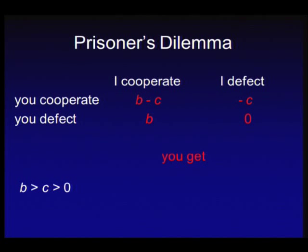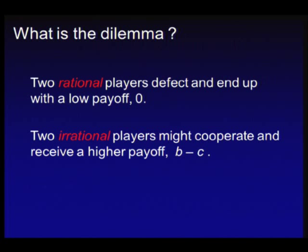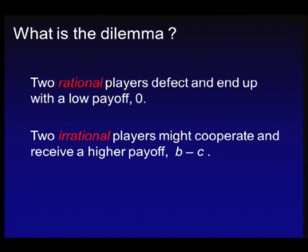Rational players should come to the conclusion to defect. But experiments show that people are actually not rational — they try to cooperate even when it doesn't make sense. I hope throughout my talk I will come to the reason why some of you wanted to cooperate with me, and you will discover why it actually makes sense in the world we're living in. Do rational players defect and end up with a low payoff? Do irrational players cooperate and receive a higher payoff? A rational player finds the Nash equilibrium, but people don't necessarily do that.